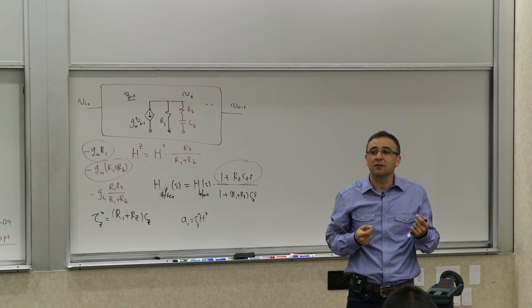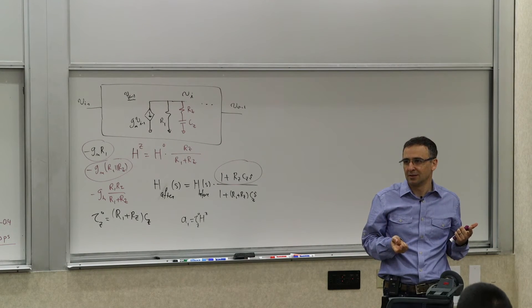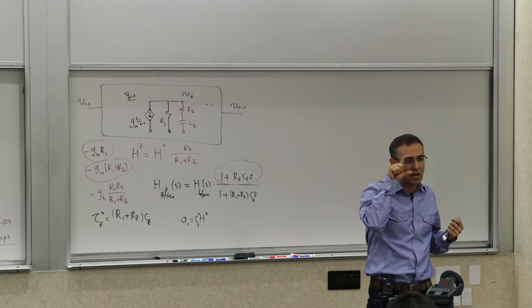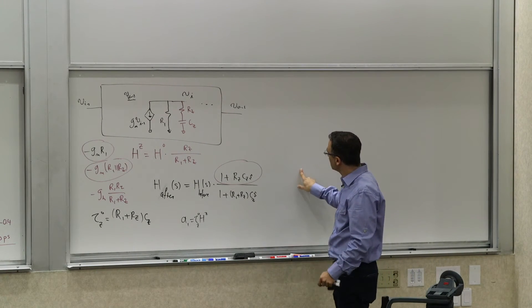Because if their product determines the location of the zero, but their values in conjunction with R1 determines also the location of the pole. Now, this is a useful thing. A lot of times in compensation of amplifier, when you want to stabilize an amplifier, you do this a lot of times. Because what happens is that you are looking at this time constant and you have a pole that's bothering you. You say, well, you know what?